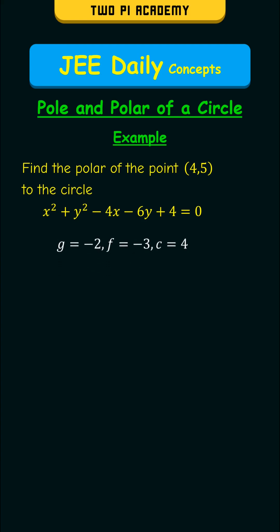And by substituting them in the equation of the polar and simplifying, we get the polar as 2x plus 2y minus 19 is equal to 0.